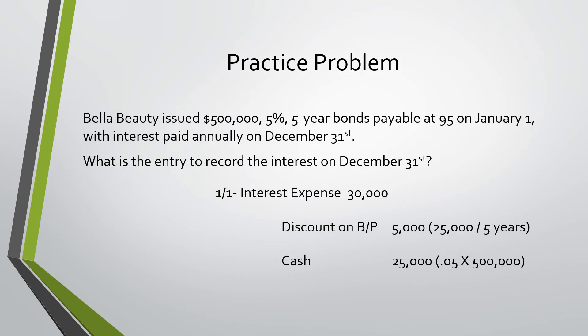In the next question, it asks what is the entry to record the interest on December 31st? When I solved this problem, I first started by finding the discount and cash amount. I found the discount by doing the $25,000 discount divided by 5 years — we are amortizing the discount by $5,000 each year. I found the cash paid by doing 5%, the interest rate, times the maturity value of the bond, which is $500,000. This gives us a total interest expense of $30,000.